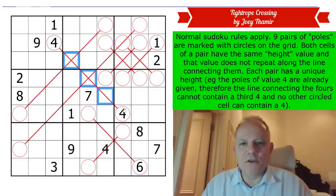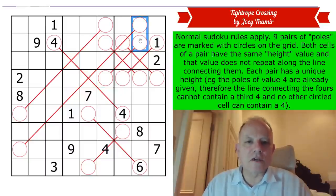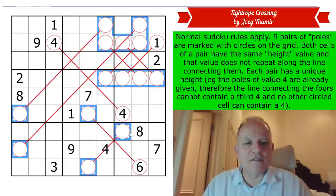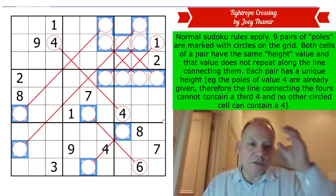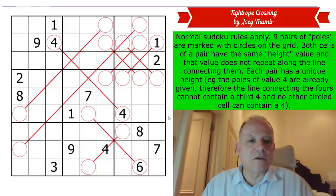Both cells of a pair have the same height value, and that value doesn't repeat along the line connecting them. Each pair has a unique height. There are nine sets of poles, so where there's one in one of them, two in another, etc. The poles value four are already given, therefore the line connecting the fours cannot contain a third four, and no other circled cell can contain a four.